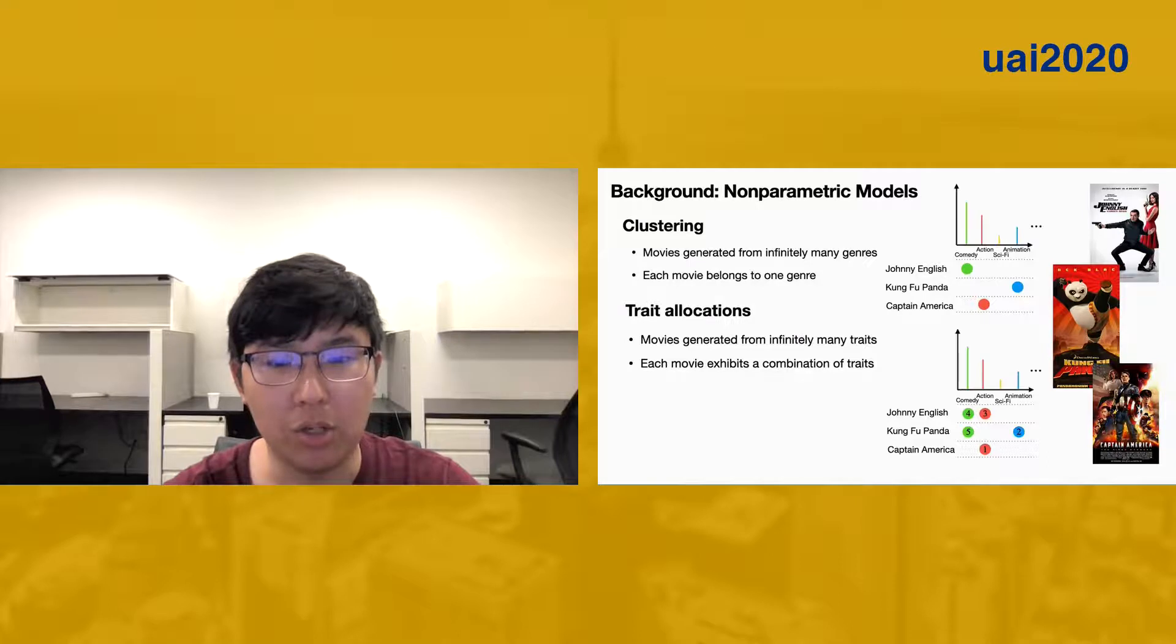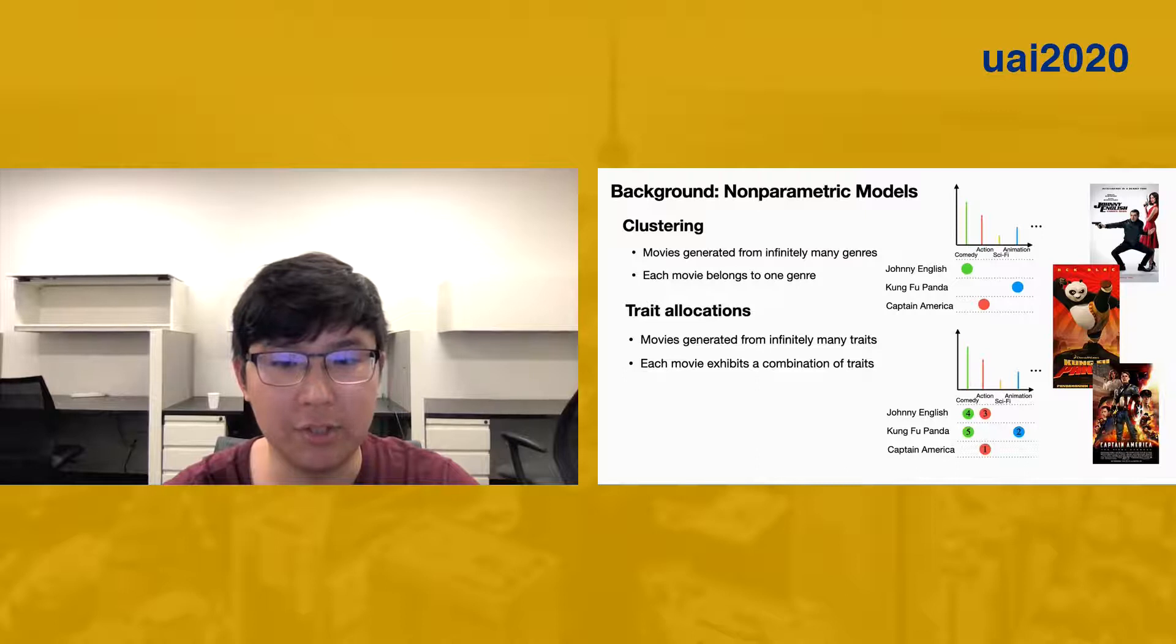In the Bayesian paradigm, we assume the rates of genres occurring in the movies of this database follow some nonparametric distribution. This however makes the exact inference slow. Our work circumvents this issue with parallelized computation.